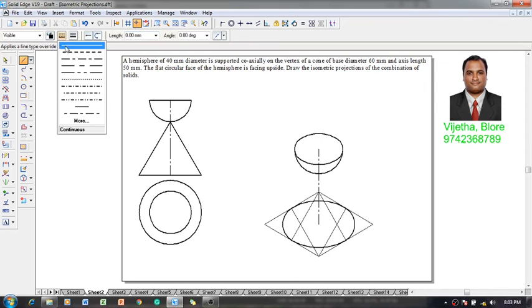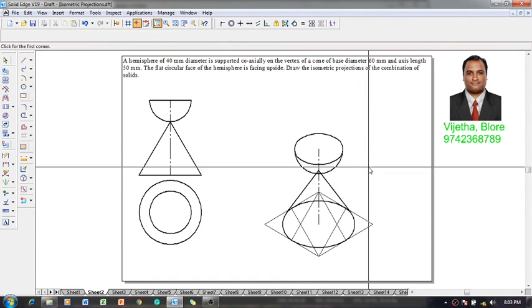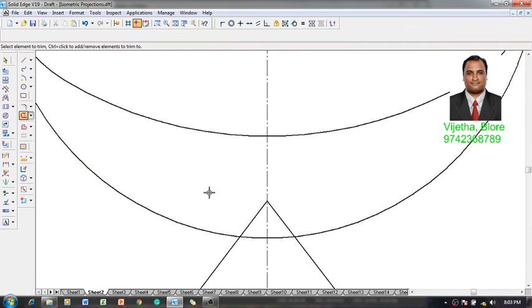After constructing this hemisphere, the conical portion is not yet completed, so let us complete it. Keep it tangential to this one. Now we know the height of the apex, so up to the apex portion it has to be connected. Then make use of a trim command.